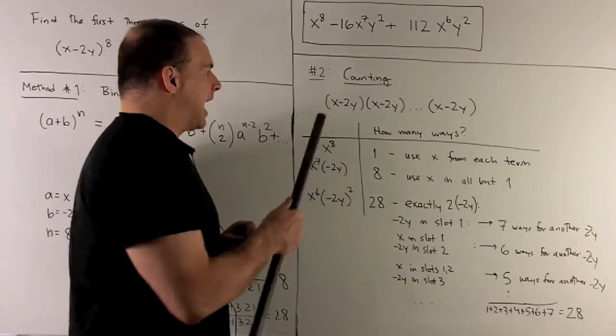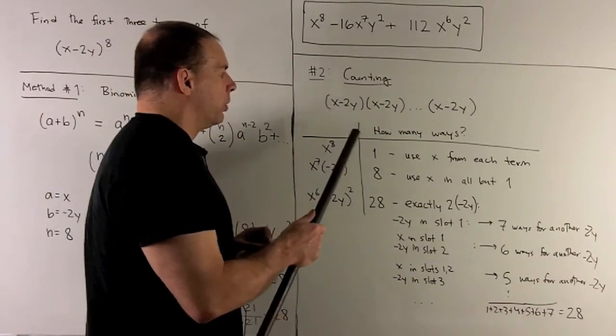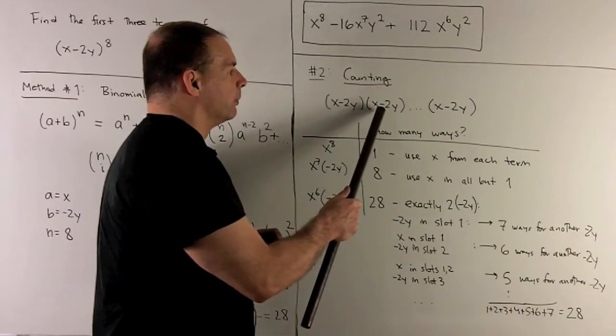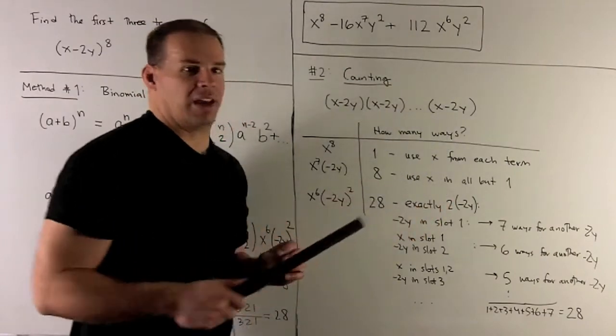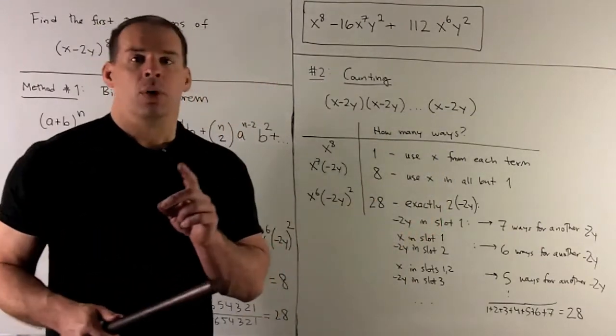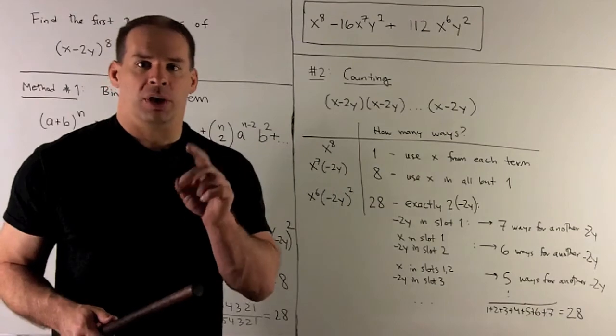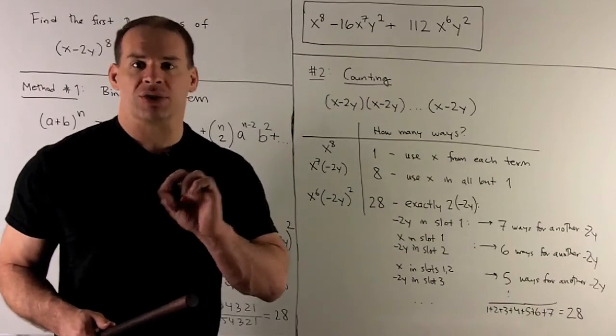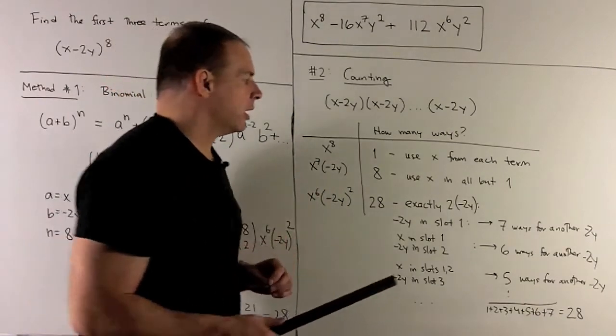Then, if I put an x in slot 1, we're going to put a -2y in slot 2. How many choices do I have to put in another -2y? Well, there are going to be six slots left over, so we'll have six choices. You put in your -2y, and then the rest are going to be forced to be x. So, I get a six.